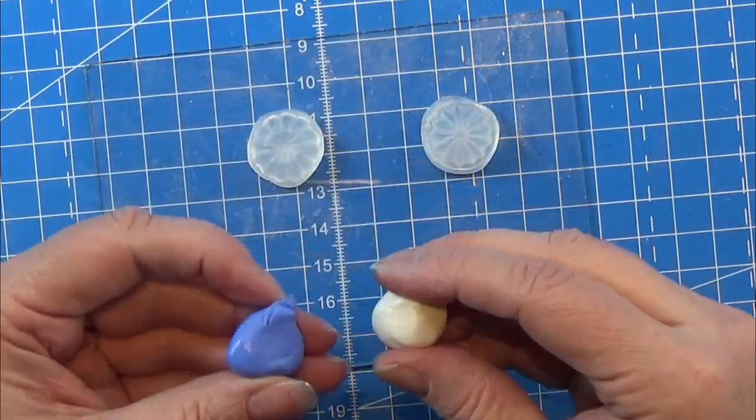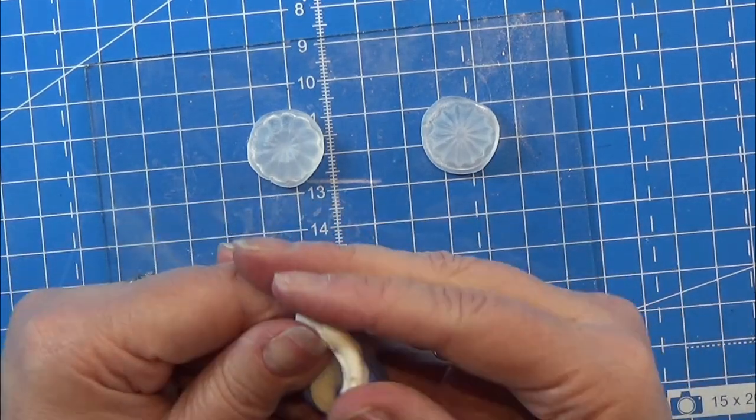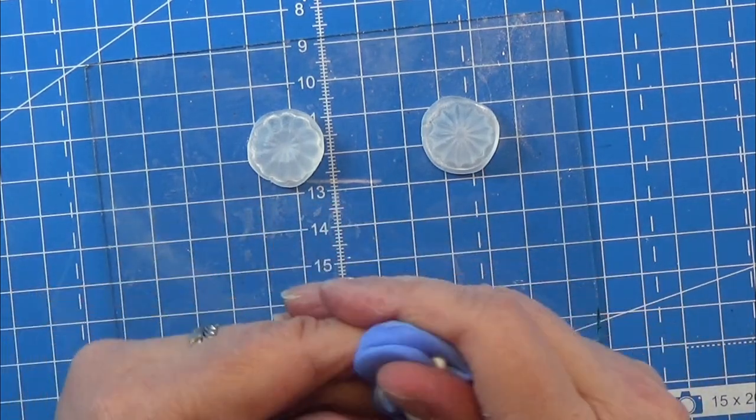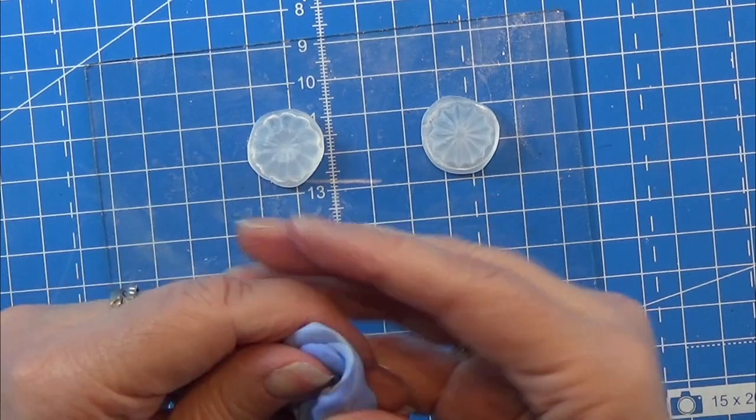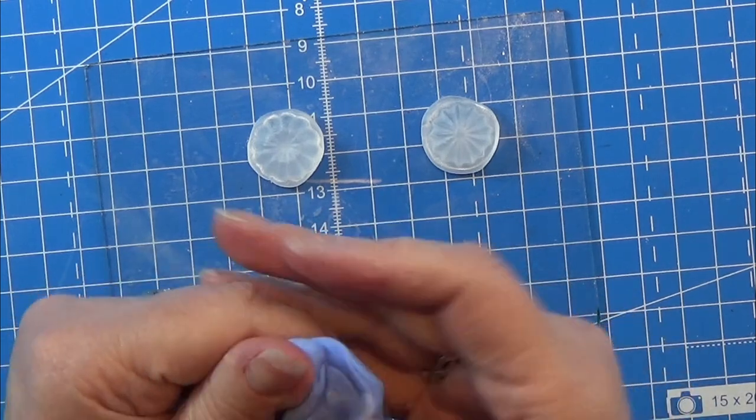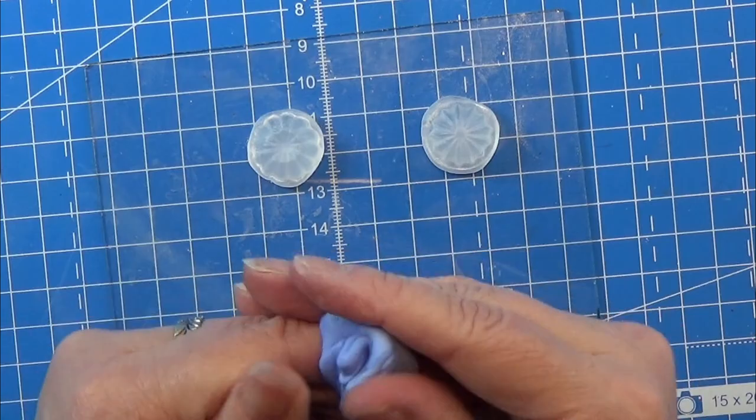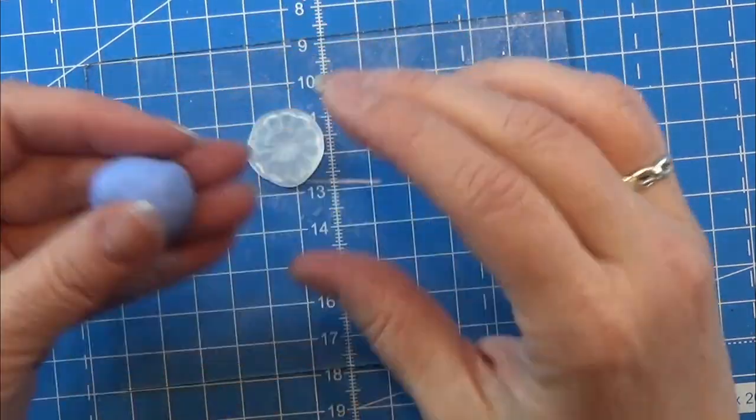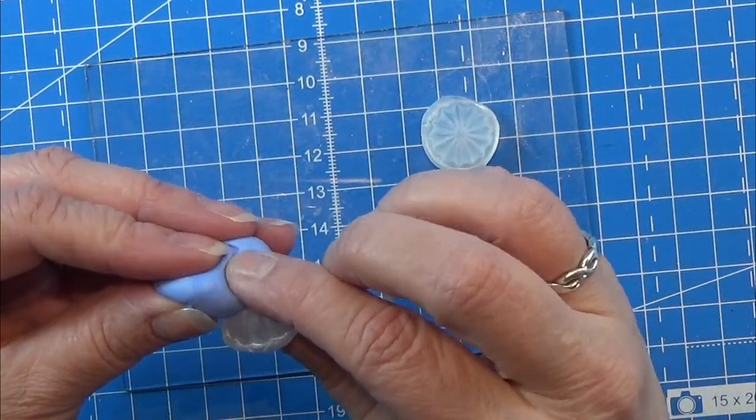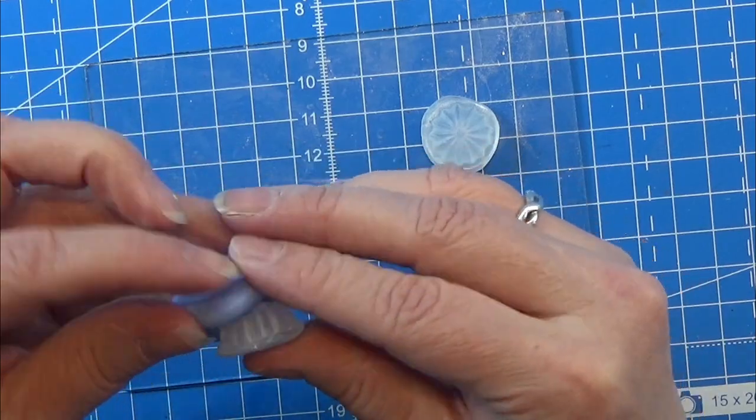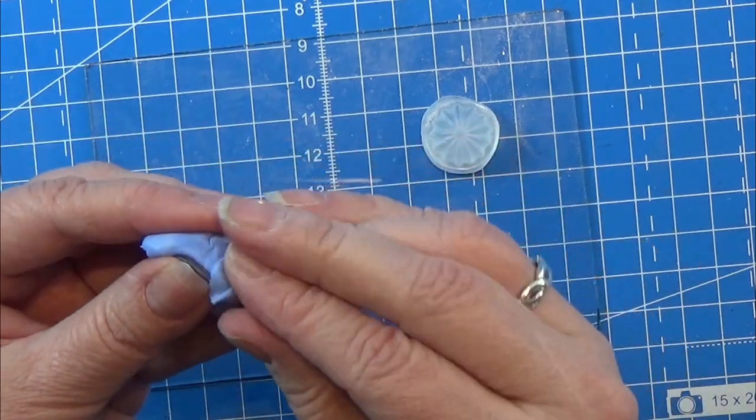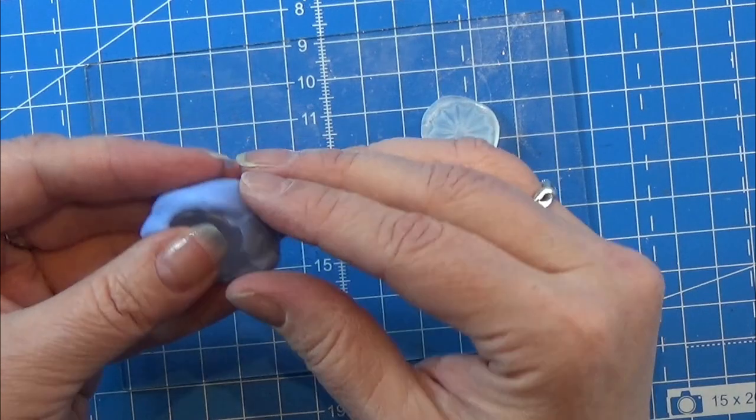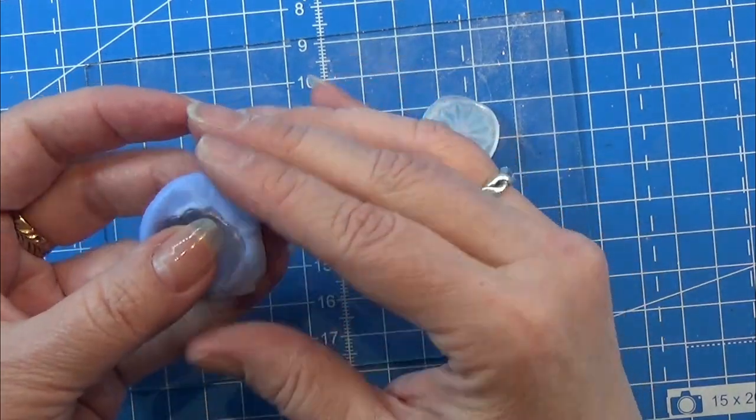I actually didn't know if this would work but here we go. So I took my Siligum that is a mold putty with a ratio of 1 to 1 and you take a white piece and a blue piece and you mix it together to get a uniform color of this bluish color. And then you just mold it around the shape that you want to have a mold from.